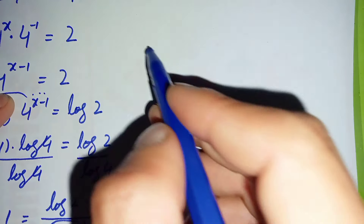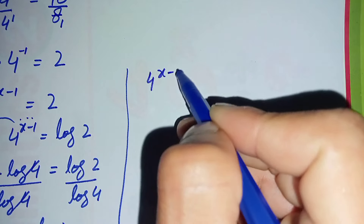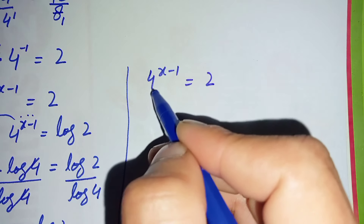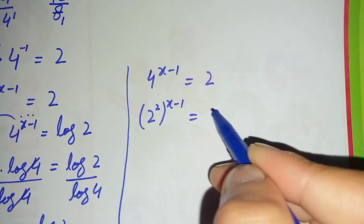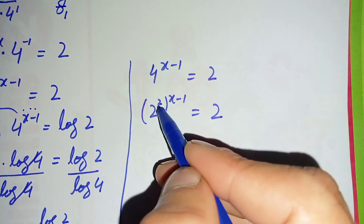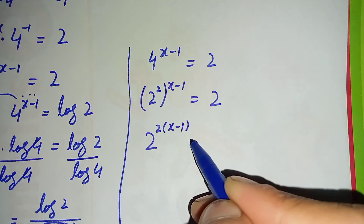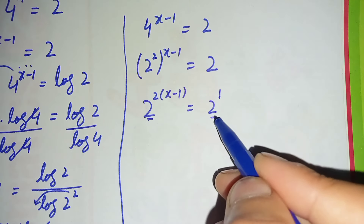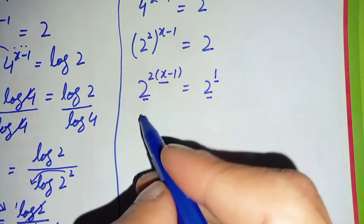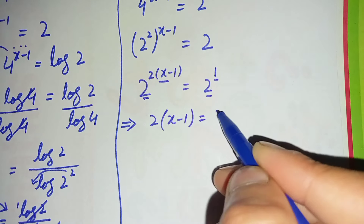Now for the second method, we start again from 4 raised to power x minus 1 is equal to 2. We rewrite 4 as 2 raised to power 2, giving 2 raised to power 2 times x minus 1 is equal to 2. Since the power of 2 on the right side is 1, and the bases on both sides are the same, we can compare the powers with each other.